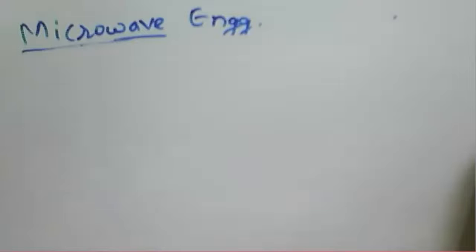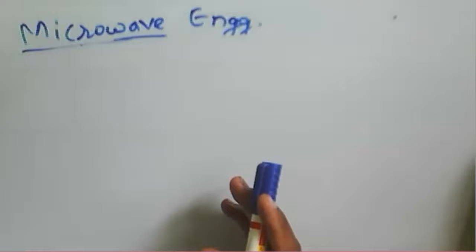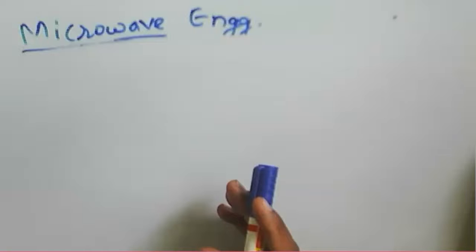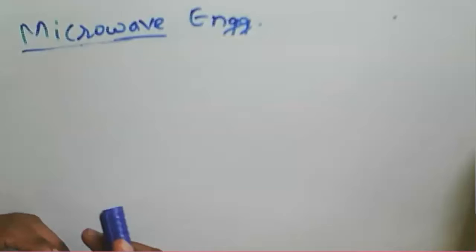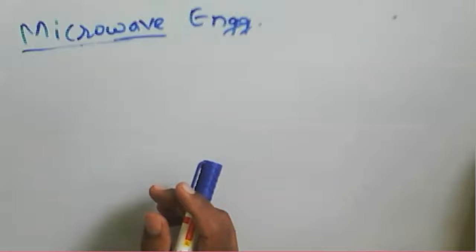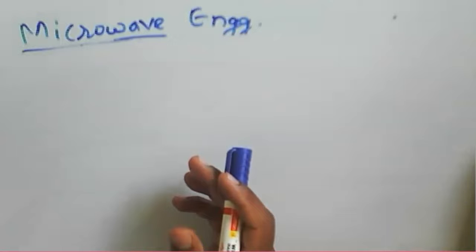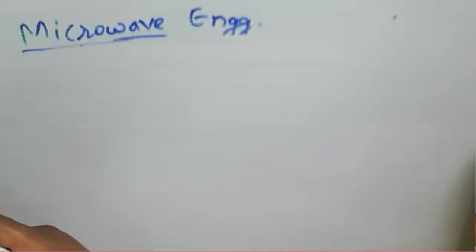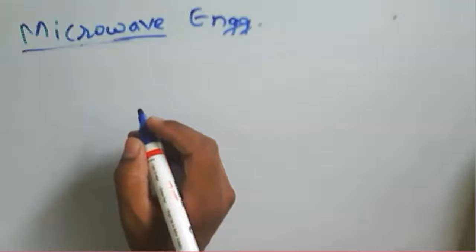We need to understand the electromagnetic band, also called the communication medium band. There are low frequency, high frequency, and various other bands. We need to identify which band corresponds to the microwave frequency range — that is, the band designations. Before starting microwave engineering, you should know which frequency bands microwave frequencies lie in.